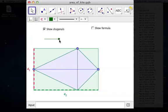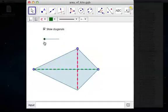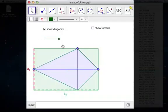But we don't want the area of the entire rectangle, we want half of that, because we want just the kite. And so the formula for the area of the kite is going to be d1 times d2 divided by 2.